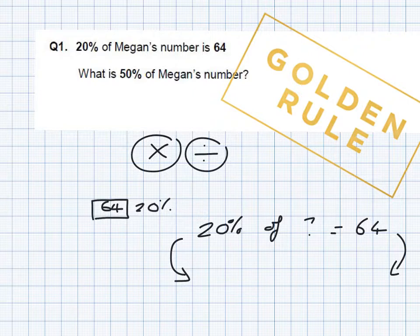So 20% to 10%. So 20 divided by 2 is 10. So I half 20% to get 10%. I half 64 to get 32.